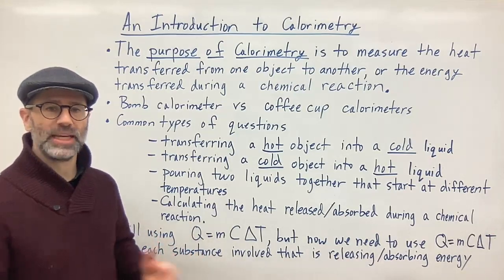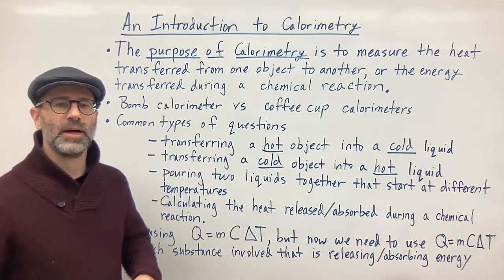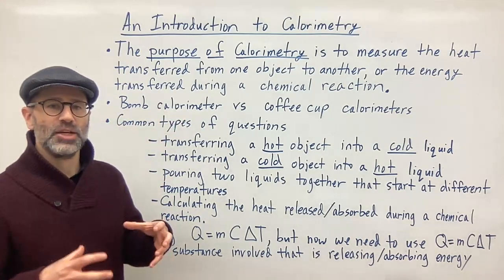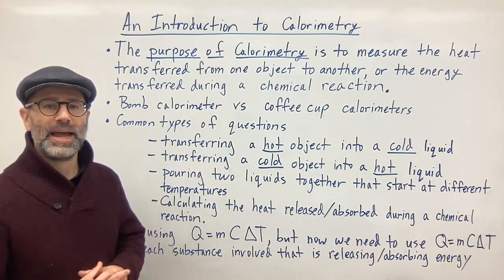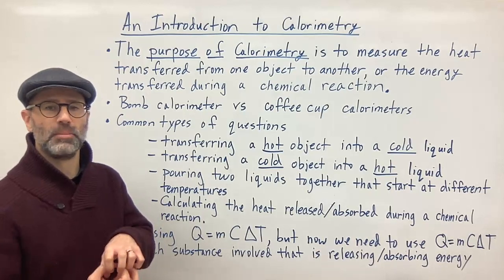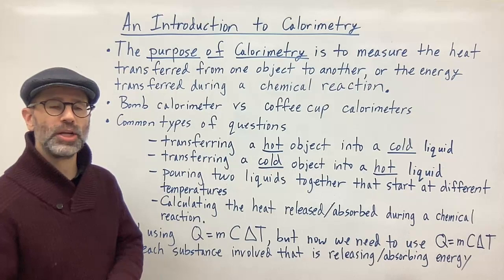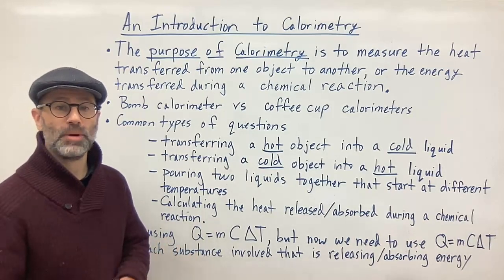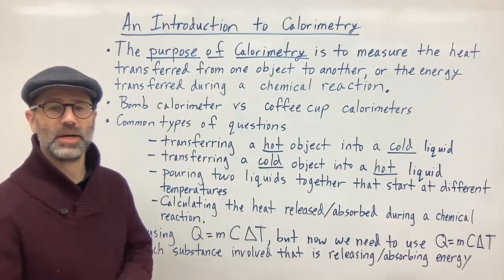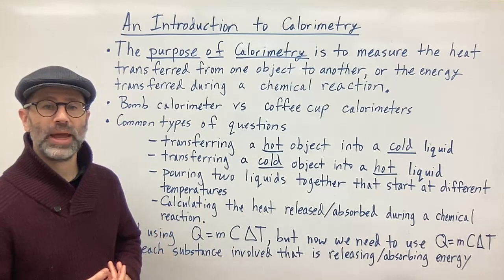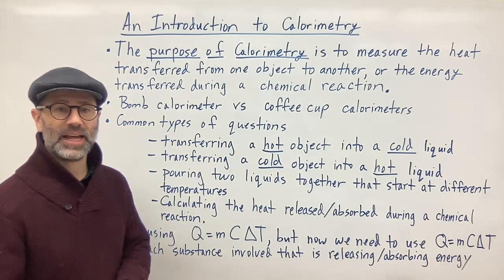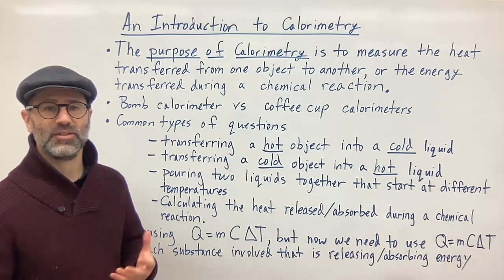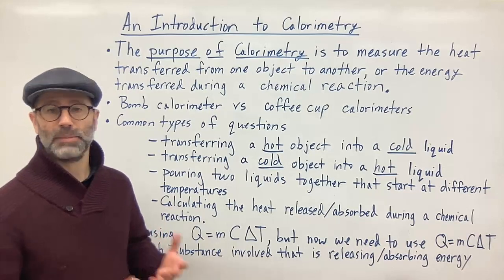I'm not going to get into the details of each different type of calorimeter — that'll be saved for another video. One is a bomb calorimeter. That's where you have a sturdy container with water and another container in which you are basically burning something. The heat released from the substance you're burning is released into the water, and you can calculate the temperature change for water and figure out how much heat was released. This is actually the way you find the number of calories in a particular food item — you burn the substance, it releases heat, and that is the number of calories in that object.